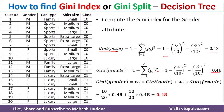The final Gini for gender is: Gini(gender) = W1 × Gini(male) + W2 × Gini(female). W1 is the weight for male, which is 10 out of 20. W2 is the weight for female, also 10 out of 20. Solving this gives the final Gini for gender.